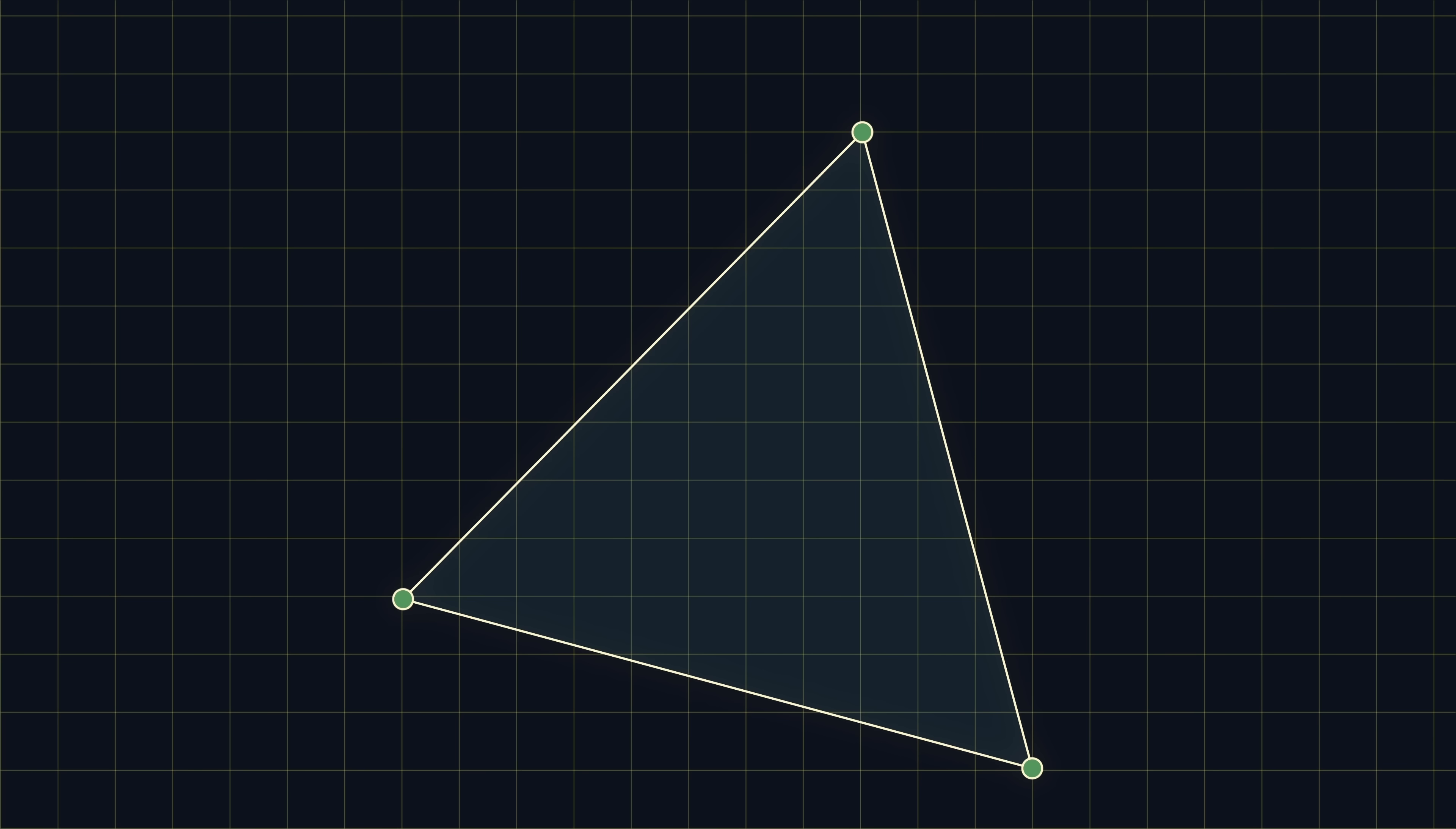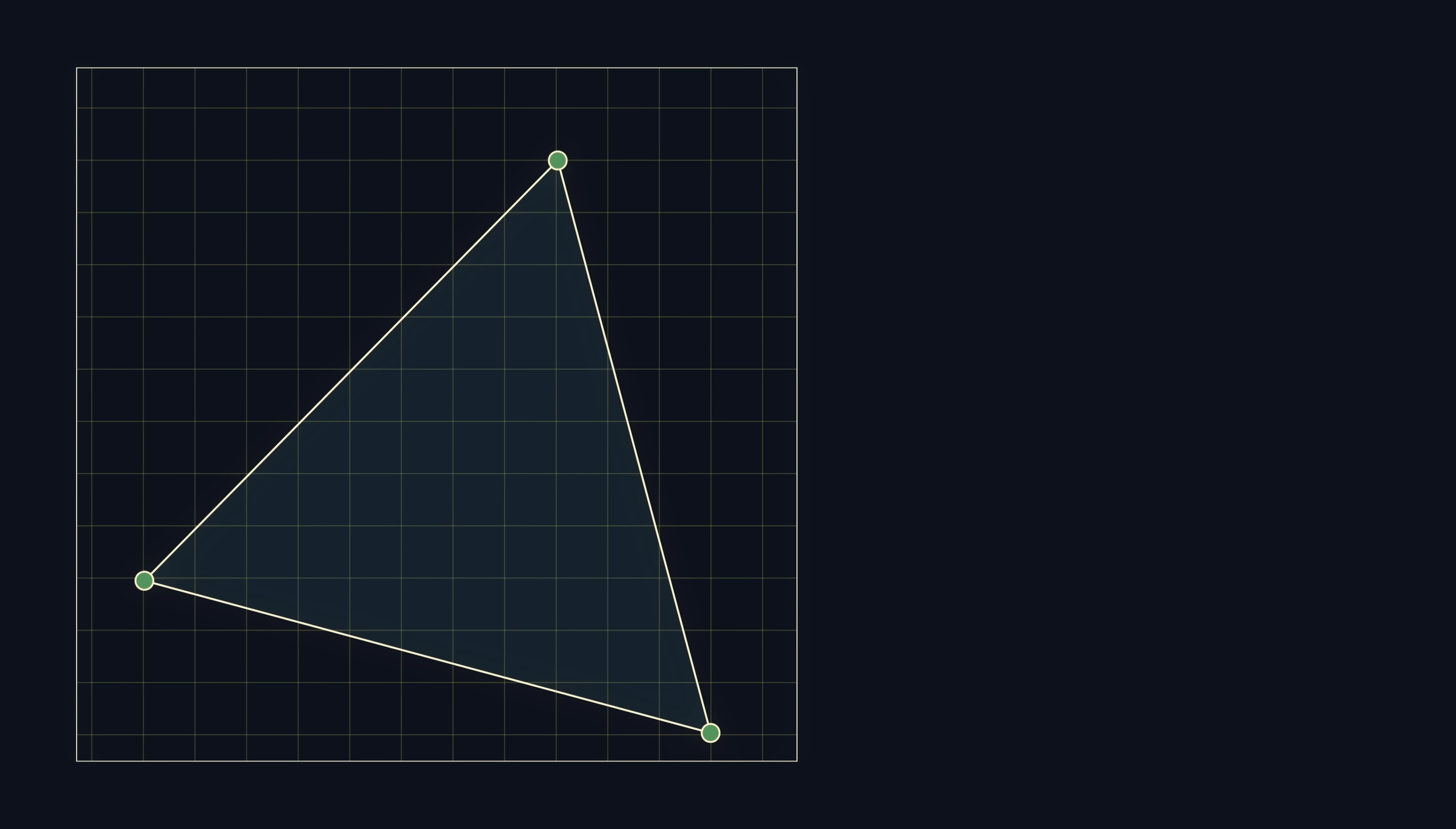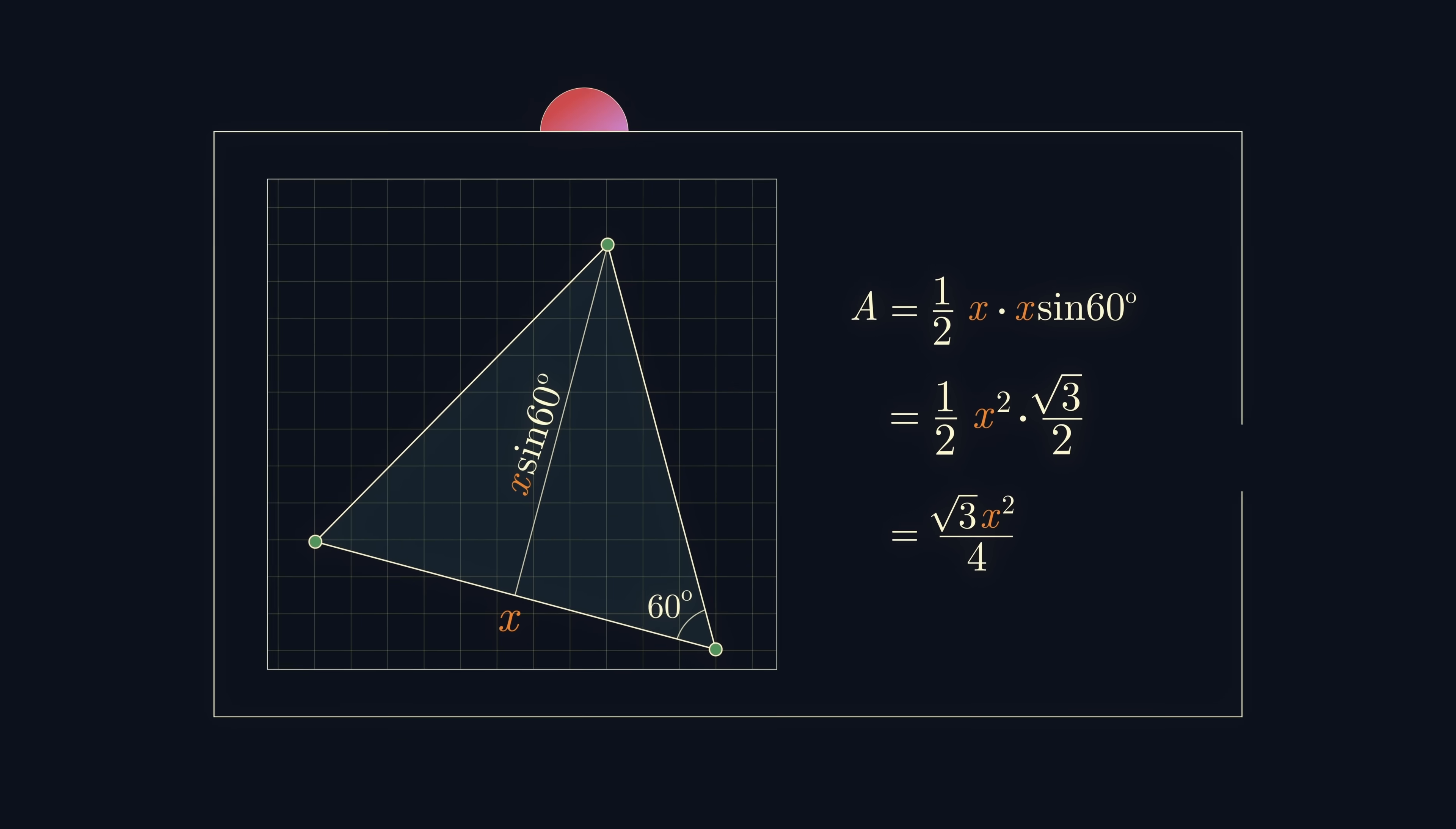Another property we could consider is the area of the triangle. We know that this is just half base times height. If the triangle is equilateral, then the height is the side length x times sine of 60, so the area is root 3 x squared over 4.